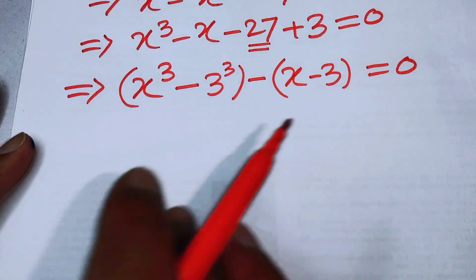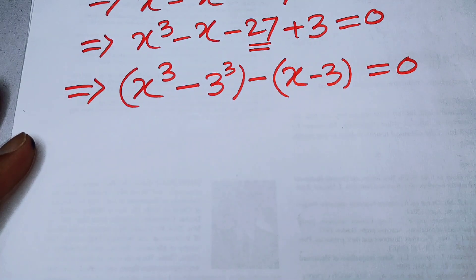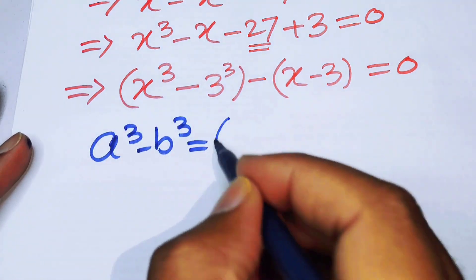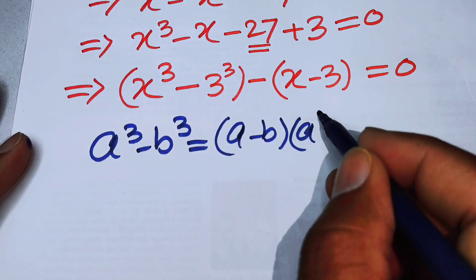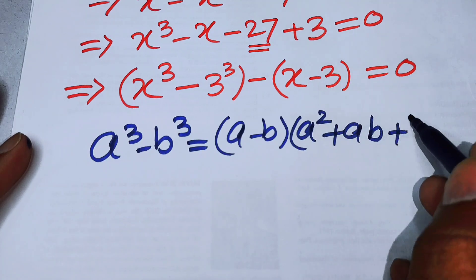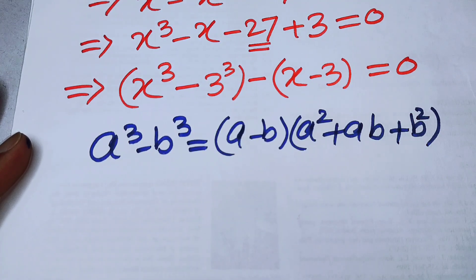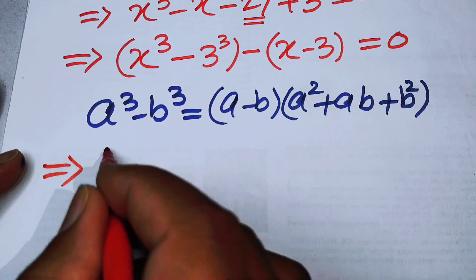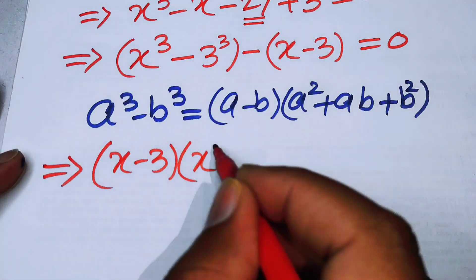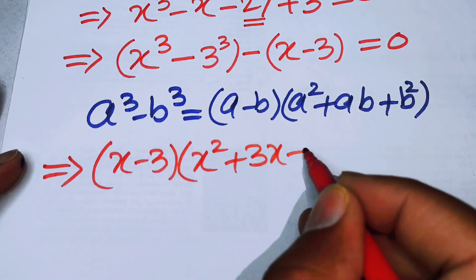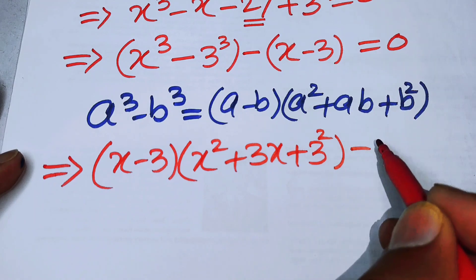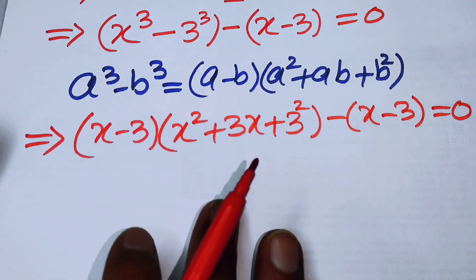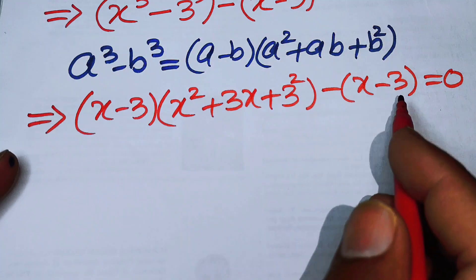Now we apply the cubic formula: a cubed minus b cubed equals a minus b times a squared plus ab plus b squared. Using this on the first group, x cubed minus 3 cubed becomes x minus 3 times x squared plus 3x plus 3 squared, and then we subtract the term minus times x minus 3, giving us x minus 3 times that expression, minus x minus 3 equals 0.